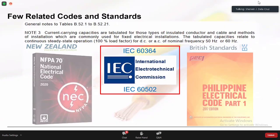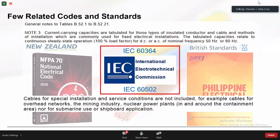Another disclaimer: cable sizing based on IEC 60364 is applicable only to fixed electrical installations. Cables for overhead lines, mining, nuclear power plants, submarine, and shipboard are not applicable. Fixed installations include power plants, oil refineries within process areas, substations, and buildings.